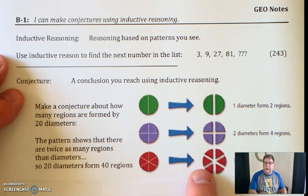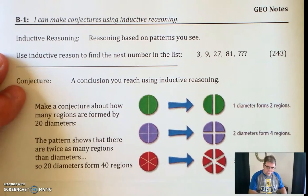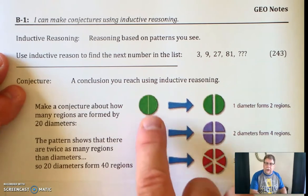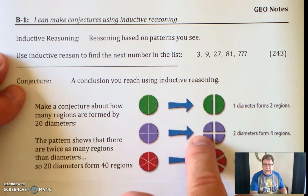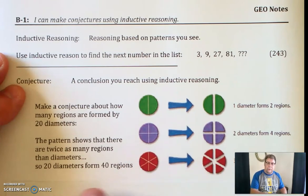Let's take a look at this one. This one's got three diameters. This one's got six regions. So we're going to have 40 regions when we have 20 diameters. And that makes a lot of sense. And we're looking at patterns built. If I do this, I get this. What happens when I put 20 in? I get 40 regions.